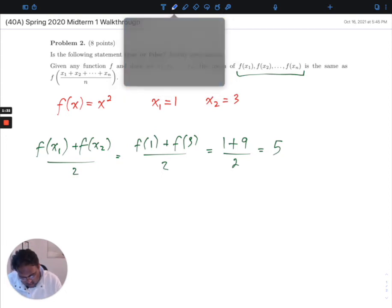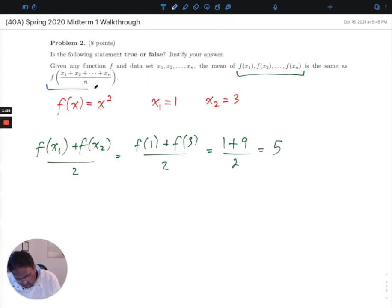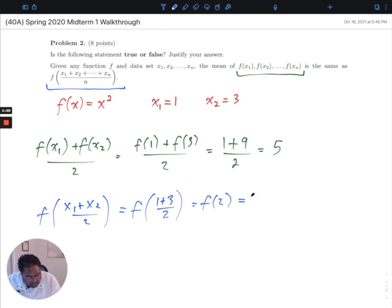Now let's look at f applied on the mean of the x's. So that looks something like this. Well, what's the mean of the x's? Well, our x's are 1 and 3, so their mean is 2. And f of 2 is 2 squared, which is 4.